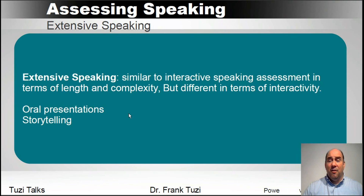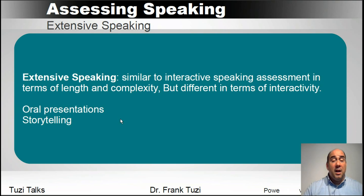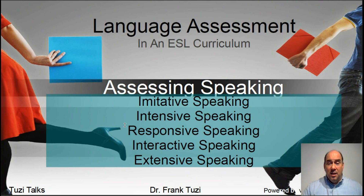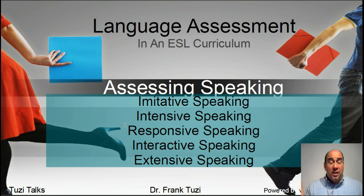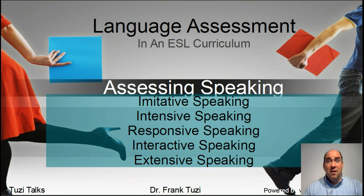With extensive speaking, it's similar to interactive except students do a lot more of their own speaking. These are things like oral presentations or storytelling — there's not a lot of interaction with other people. It's still long, but it's more of a monologue, more of you being up there by yourself. So we've gone from little to big — from the micro level all the way up to the macro, to extensive speaking. These are all the different ways that you can assess speaking. I know I've covered these rather quickly, but I did want to give you this brief overview. Thank you for stopping by — if you have any questions you can send me an email. Talk to you later, bye-bye.